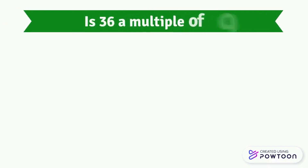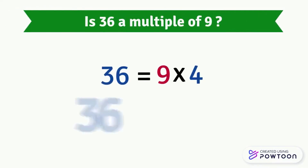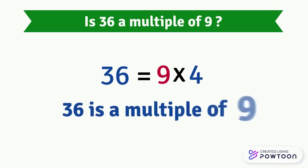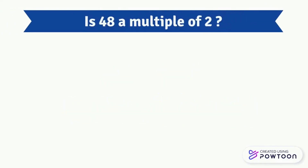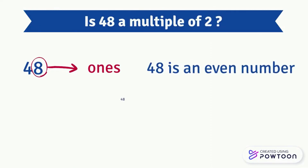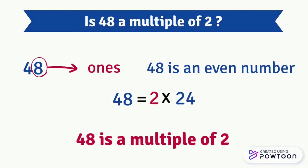Is 36 a multiple of 9? 36 equals 9 times 4, so 36 is a multiple of 9. Is 48 a multiple of 2? The ones digit in 48 is 8, so 48 is an even number. Since 48 equals 2 times 24, 48 is a multiple of 2.